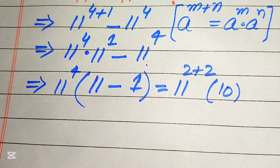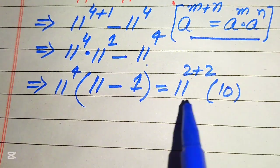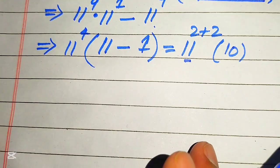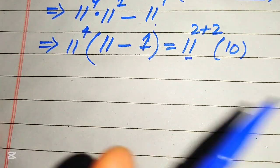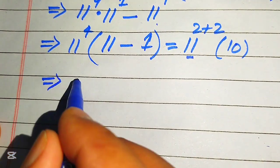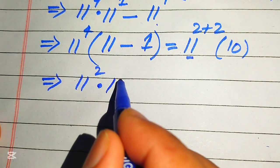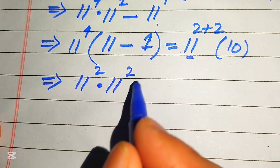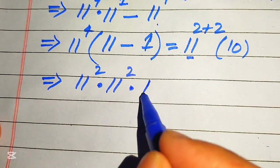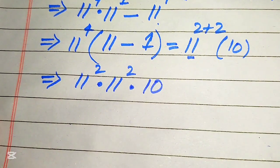We again apply the exponent law on this term and get 11 squared multiplied by 11 squared, multiplied by 10.